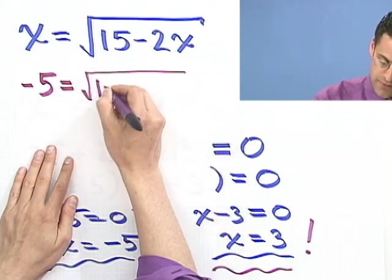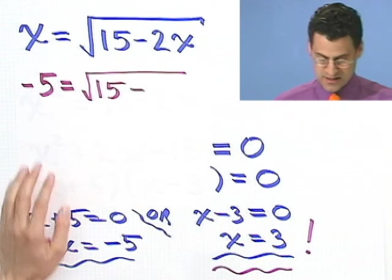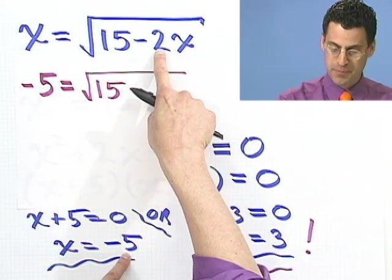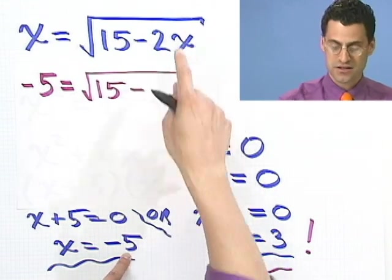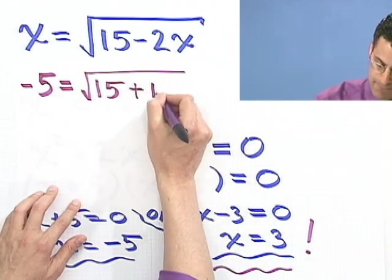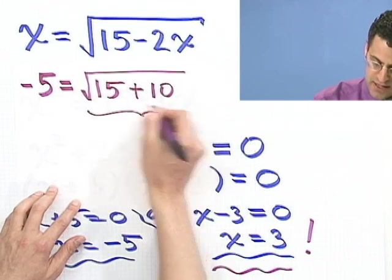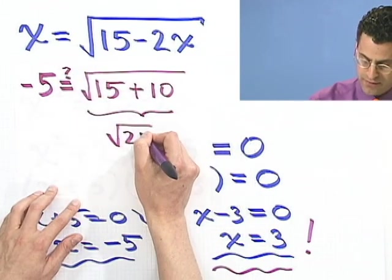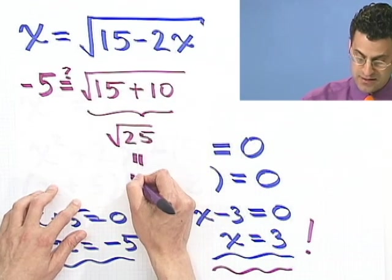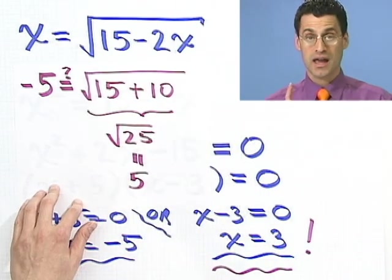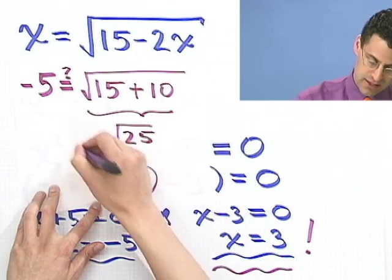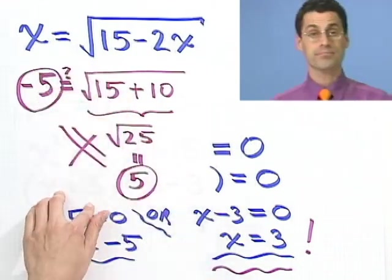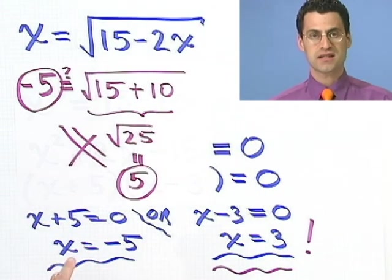I have square root of 15 minus, and if I plug in a minus 5 here, that would give me a plus 10. So I would see a plus 10. And this thing would equal the square root of 25. But the square root of 25 is 5. And you'll notice that 5 is not equal to minus 5. So in fact, this is an extraneous root.